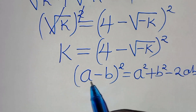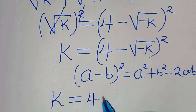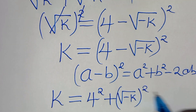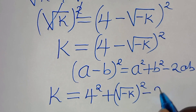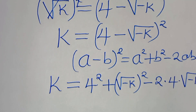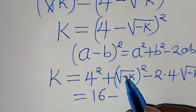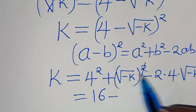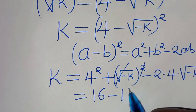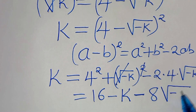We can express (a minus b)² as a squared plus b squared minus 2ab. Applying this algebraic identity, we have k equals 4 squared plus the square root of minus k squared, then subtract 2 times 4 times the square root of minus k. So 4 squared is 16, and the square root of minus k squared eliminates the square root sign, giving us plus times minus k, which is minus k, then subtract 8 times the square root of minus k.